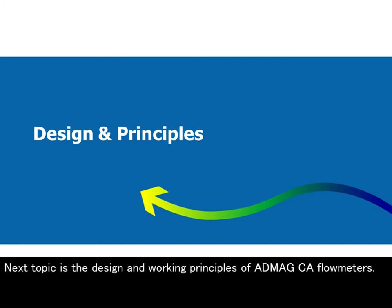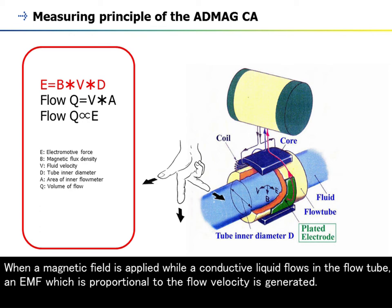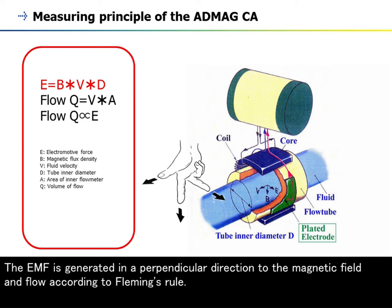The next topic is the design and working principles of Abmec CA flow meters. The measuring principle of the Abmec CA is based on Faraday's law of electromagnetic induction. When a magnetic field is applied while a conductive liquid flows in the flow tube, an EMF which is proportional to the flow velocity is generated. The EMF is generated in a perpendicular direction to the magnetic field and flow according to Fleming's rule.